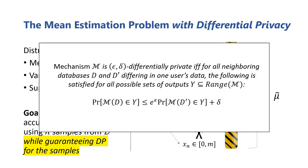I won't dwell much on precisely what the definition of differential privacy is, but to briefly summarize it, we say that a mechanism satisfies differential privacy if, for all pairs of inputs that differ in only one user's data, the mechanism's corresponding pair of output distributions are approximately the same.